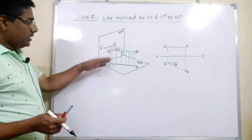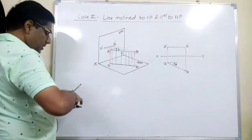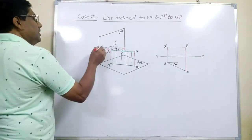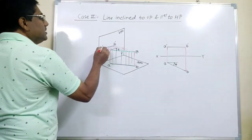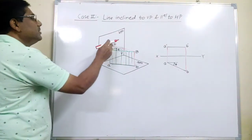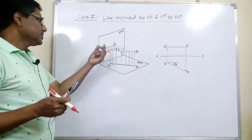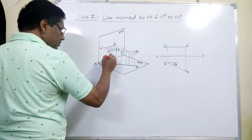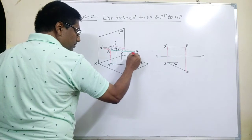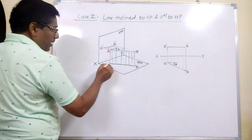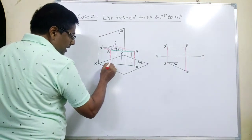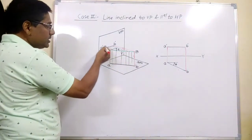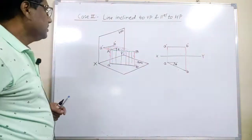If I want to draw its front view and top view, I have to project the endpoints of this line onto the vertical plane and I get two points a-dash and b-dash. Joining these two ends gives the front view, which will be of some short length because this line is making some angle with the vertical plane. To get its top view, I project the ends of this line onto the horizontal plane, giving points small a and small b. The front view notations are a-dash and b-dash.